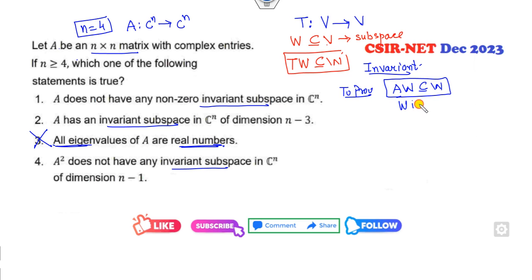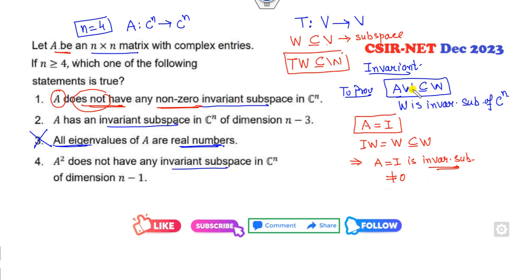What comes in your mind when you look about the matrix? Firstly, identity matrix. If you take A = I, does this property satisfy? IW is always a subset of W. So what is the meaning of that? This A, that is basically identity, is my invariant subspace. So look at that. A does not have any non-zero invariant. Clearly say this is my non-zero and it does not have. But I can prove that it is a subspace, it is an invariant subspace. So this option is cancelled.